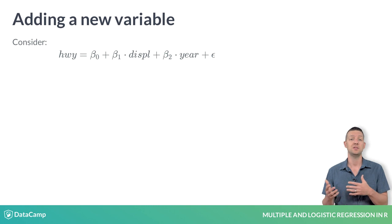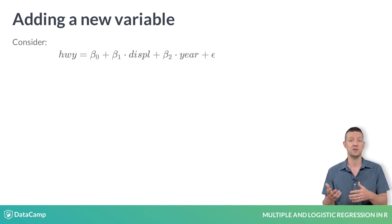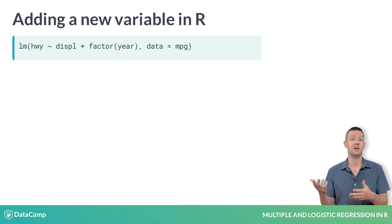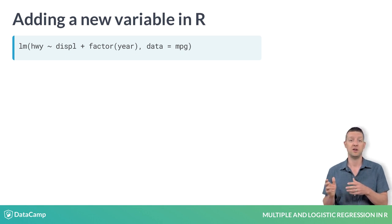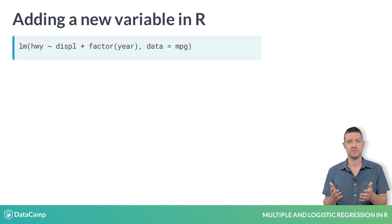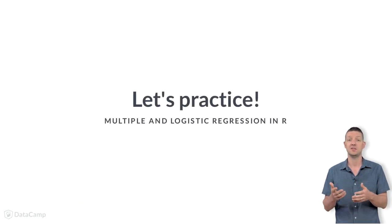Multiple regression allows us to build such models by simply adding another variable and another coefficient to our model. Telling R about the second variable in our regression model is just as easy — we simply add another term to the right-hand side of the formula that we pass to the LM function. We have to be careful to make sure that R interprets year as a categorical variable, since it is encoded as a number. For our purposes, the year should be thought of as a label, not a quantity. Now you'll try it out in the exercises.